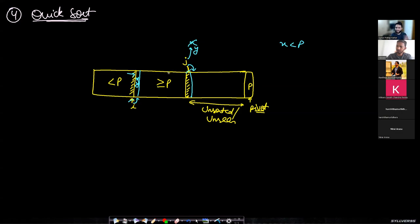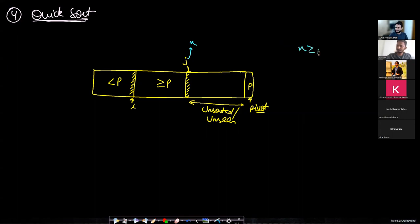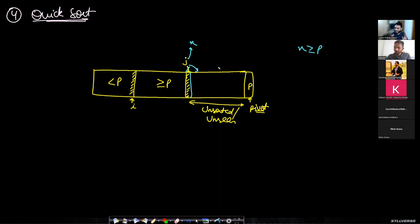That covers case one: if x is less than p. For case two — if x is greater than or equal to p — you don't need to do anything; just skip to the next item. This region will naturally increase as you skip. There are no more than two cases: either less than p or greater than or equal to p.